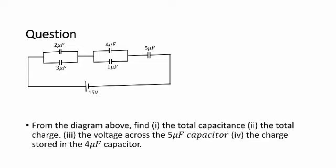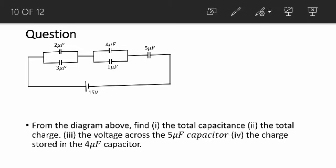We look at the circuit. We have the two microfarad capacitor in parallel with the three microfarad capacitor, and we have the four microfarad capacitor in parallel with the one microfarad capacitor, then all of them are in series with the five microfarad capacitor. From the question, we are asked to first find the total capacitance, then the total charge, thirdly the voltage across the five microfarad capacitor, then the charge stored in the four microfarad capacitor.